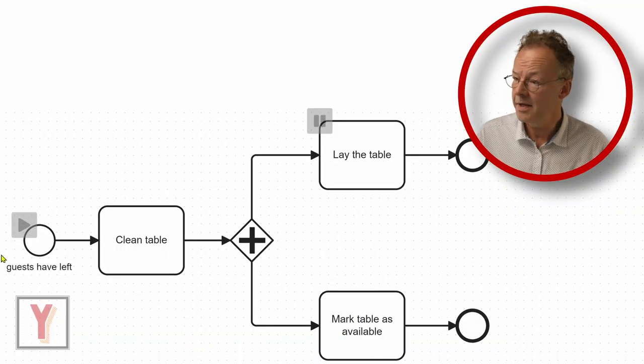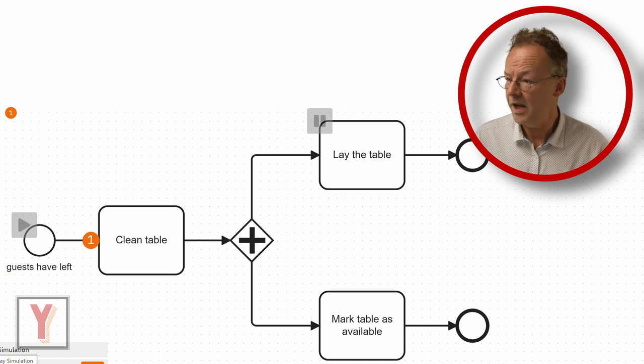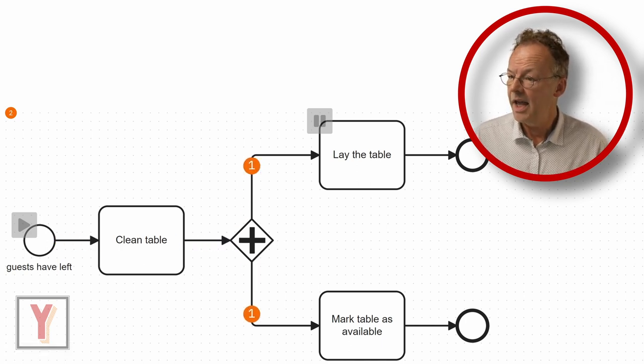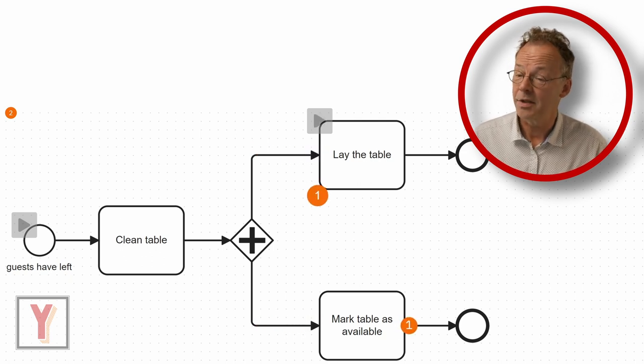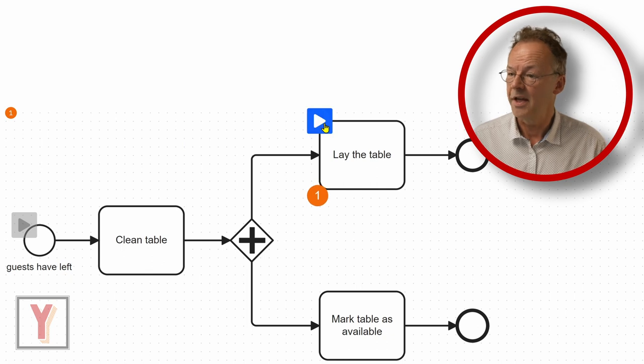Here in BPMN our process: guests have left and we clean the table, and then we have the parallel gateway and we first mark the table as available and then we lay the table again and then the process instance is finished.